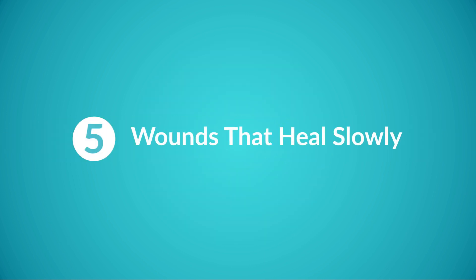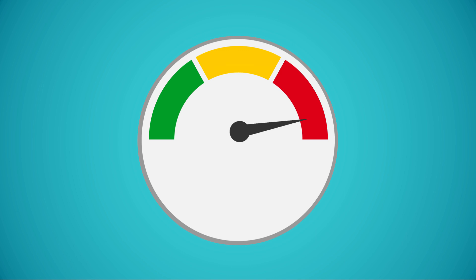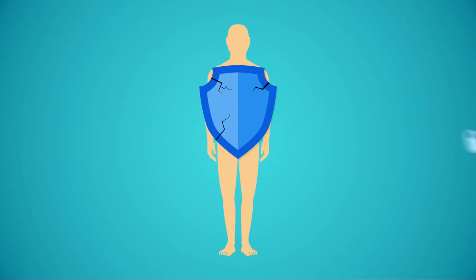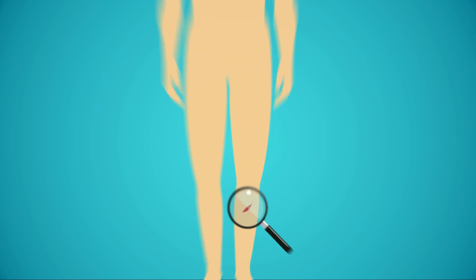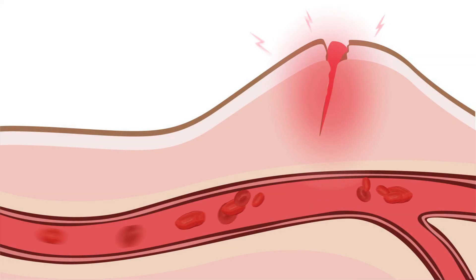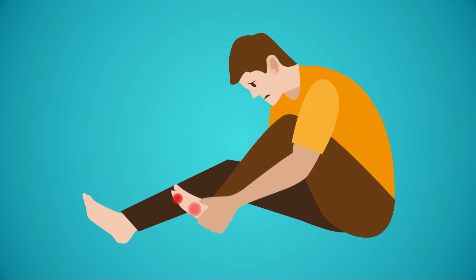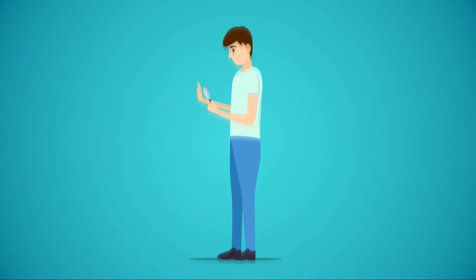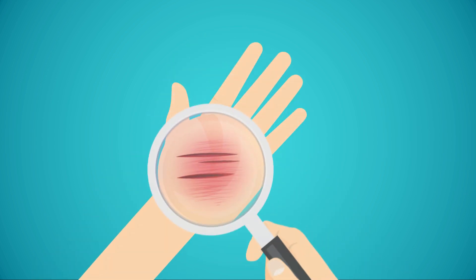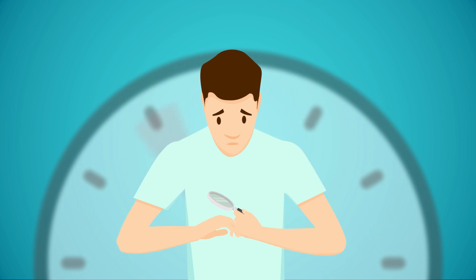5. Wounds That Heal Slowly. High blood sugar levels affect your body's immune system, consequently reducing your ability to heal. It also results in poor circulation and inflammation, making it hard for blood to reach and repair wounds. This can be especially dangerous when it comes to foot care. Diabetics often develop ulcers and blisters, which can be slow to heal. Failure to treat these wounds can result in serious complications, including amputation. Regularly checking your body for cuts and wounds is a must. If you notice that cuts are very slow to heal, this could be an early warning sign of type 2 diabetes.